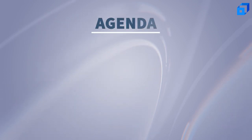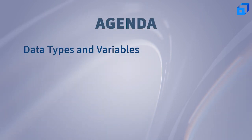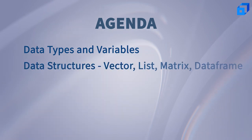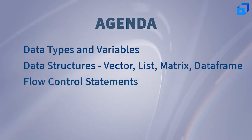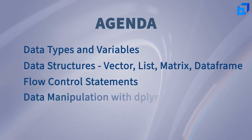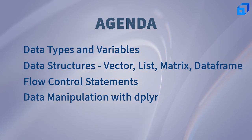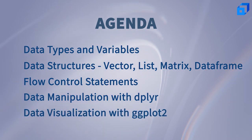In this tutorial, we shall start off by working with data types and variables in R. Then we shall work with different data structures in R, such as vector, list, matrices, and data frame. Going ahead, we shall work with flow control statements in R, following which we shall work with the dplyr library for data manipulation operations. Finally, we shall work with the ggplot2 library for data visualization.